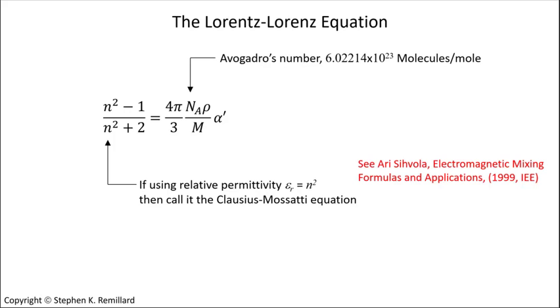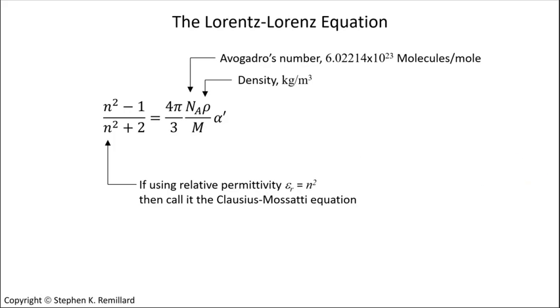On the right-hand side, there's Avogadro's number, rho is mass density, big M in the denominator is the mass of one mole, then there's the volume polarizability, alpha prime. To simplify it, look at this ratio. Write it out using units instead, cancel what cancels, and you'll see that it's actually the number of molecules per cubic meter, or the number density.